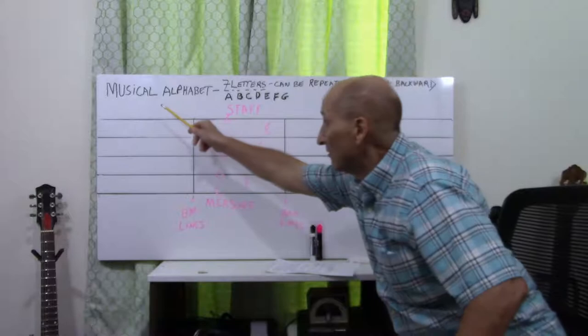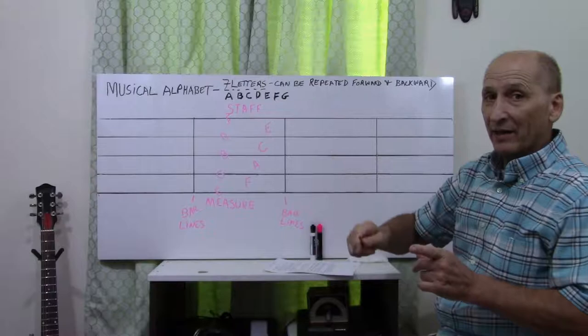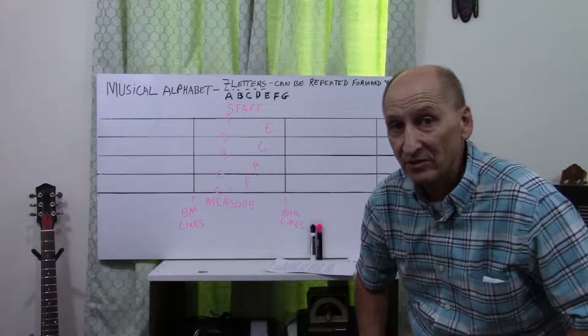Now, moving right along, we jump right into it. Musical alphabet. Right here, we see it. It's seven letters and the seven letters can be repeated with the alphabet going up and the alphabet going back. The musical alphabet only has seven letters.